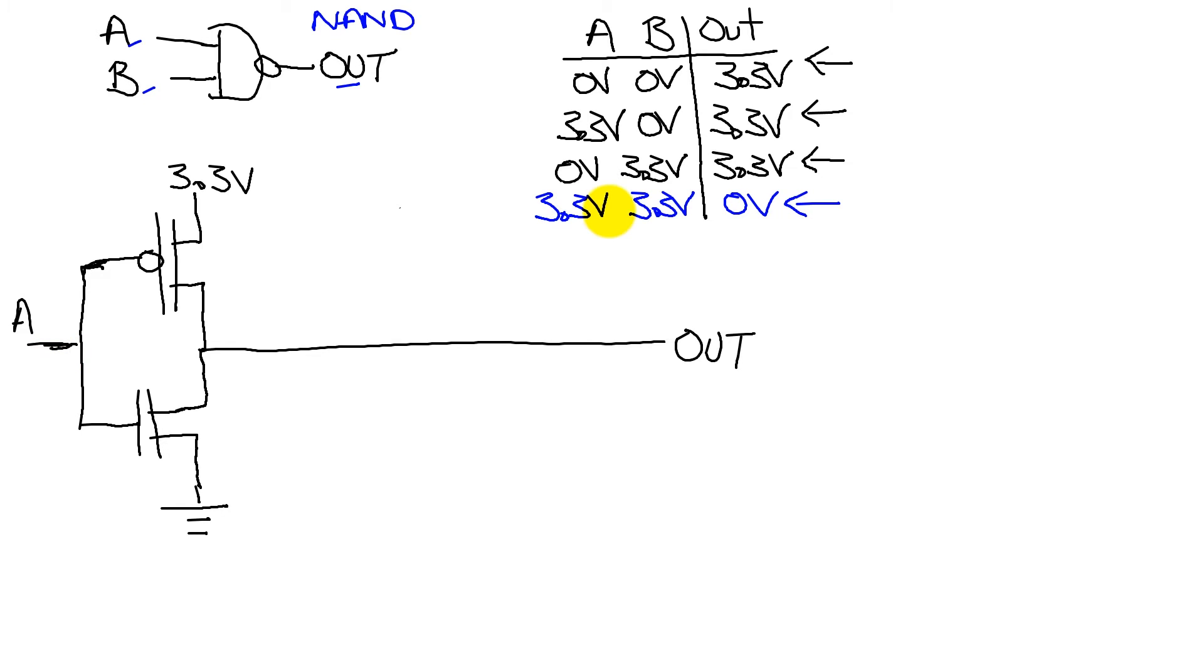And we see from last time, the way to create a plus three output is to generate on the P channel, we generate a positive voltage across the source and the gate. So if we need to create a 3.3 for the B, we're going to create another transistor right here, another P channel, tie it to 3.3 volts.